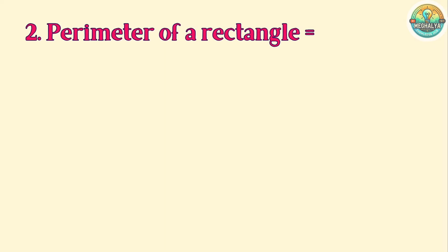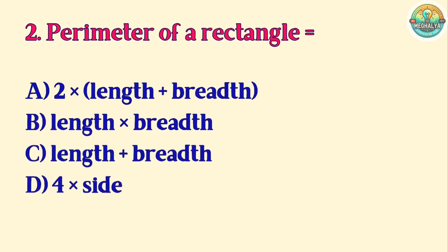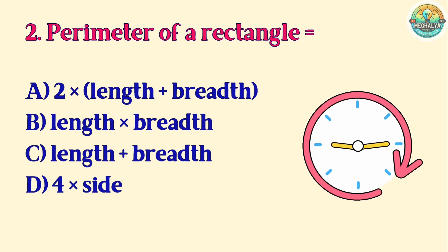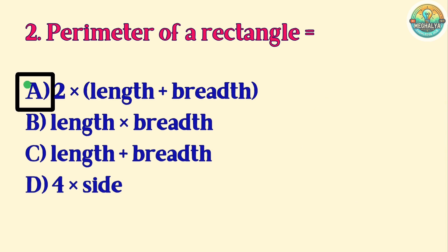Question 2. Perimeter of a rectangle equals: A. 2 times the length plus the breadth. B. Length times breadth. C. Length plus breadth. D. 4 times side. Correct answer is A. 2 times the length plus the breadth.